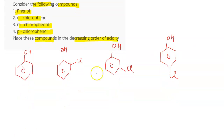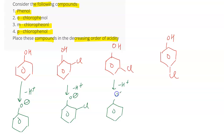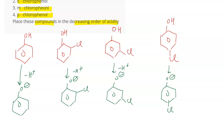Now in order to determine the order of acidity, each compound is going to lose H+. So H+ will be lost, forming a benzene ring with O-. Similarly, the next one forms O- with Cl on the ortho position, the third forms O- with Cl at the meta position, and the last one has O- with Cl at the para position. To rank acidity, we need to understand the stability of these ions.